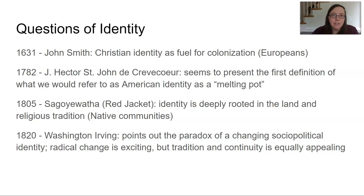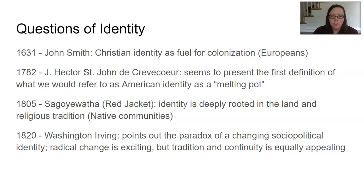Then in 1820, Washington Irving is talking about an identity paradox. All of these things are changing — 50 years post-Revolutionary War, more of what we'd consider modern ideals are coming forth. How do we deal with the sociopolitical identity of radical change that's super exciting, but also maybe we still want to hang on to tradition? There's something equally appealing between a ton of change and no change at all, and we'll read that strange paradox in texts written by Irving.